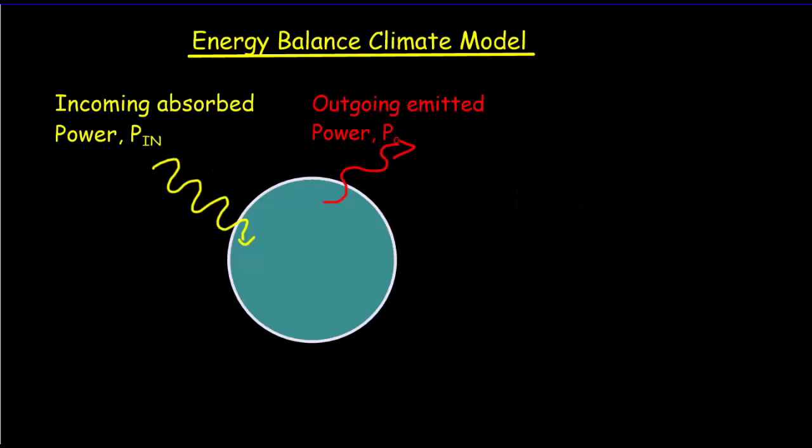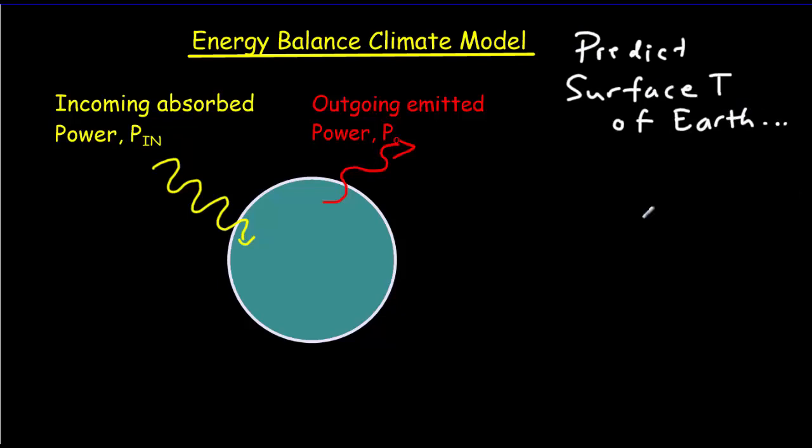What we're really after in this energy balance climate model is a prediction for the surface temperature of the Earth. The Earth in its atmosphere is in a giant vacuum, and that means we can't have any conduction or convection as methods of heat flow to the Earth. The only heat transfer to the Earth is going to have to come from radiation.